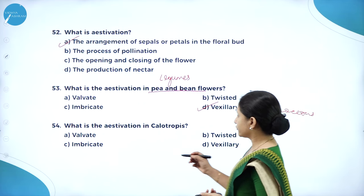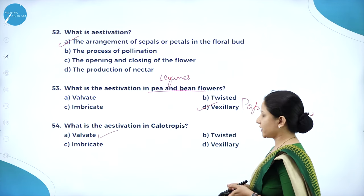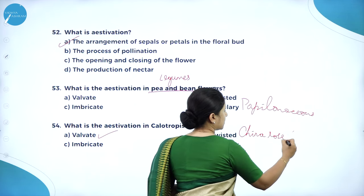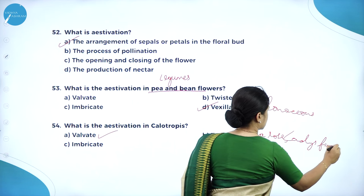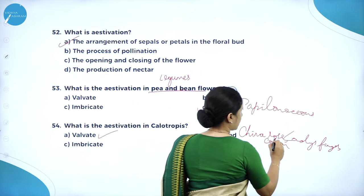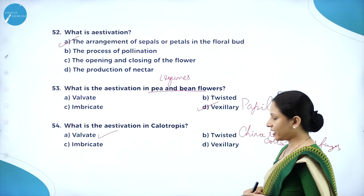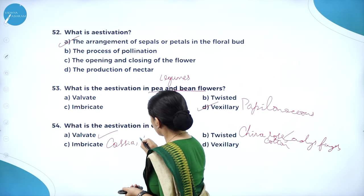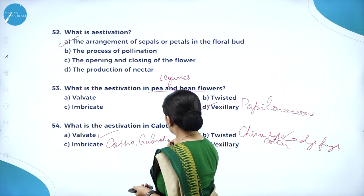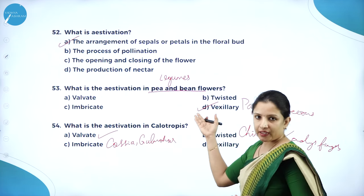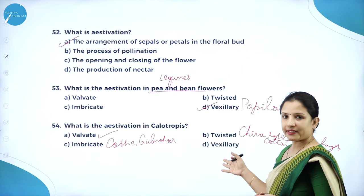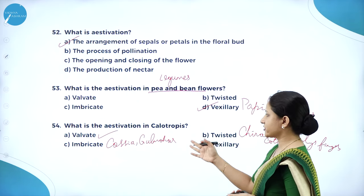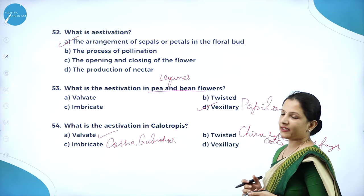What is the estivation in Calotropis? It is valvate estivation. For twisted estivation: China rose, lady's finger, cotton. For imbricate estivation: cassia and gulmohar. For vexillary estivation: pea, bean, and all legumes. So for Calotropis, valvate estivation is the right answer.